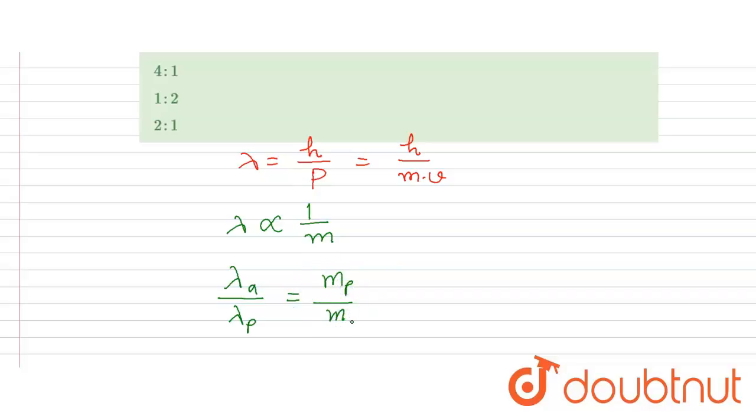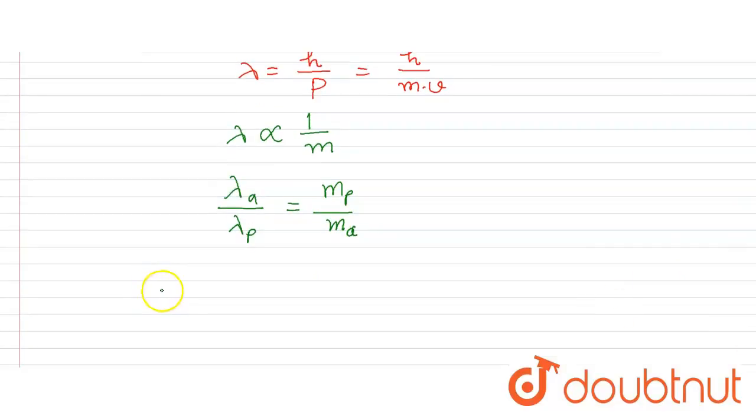This is proton, this is alpha. Now in the question it is given that ratio of mass of proton divided by mass of alpha is equal to 1 divided by 4. So the lambda alpha divided by lambda proton will be equal to 1 divided by 4.